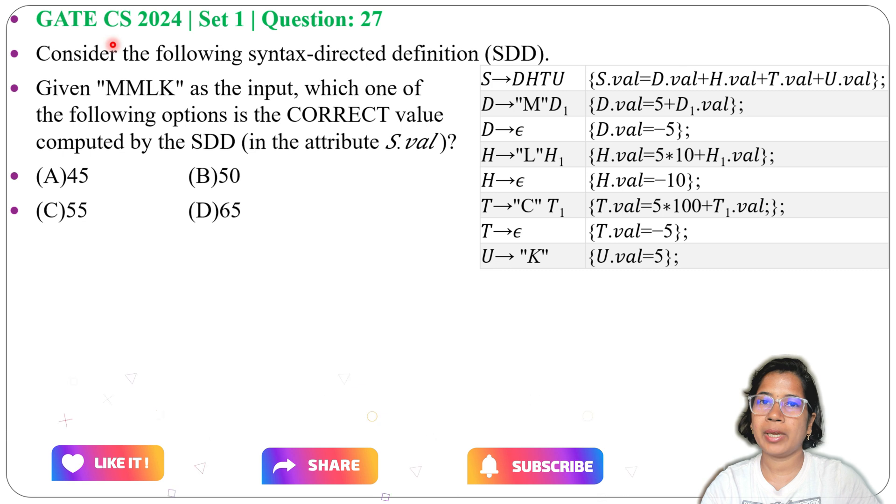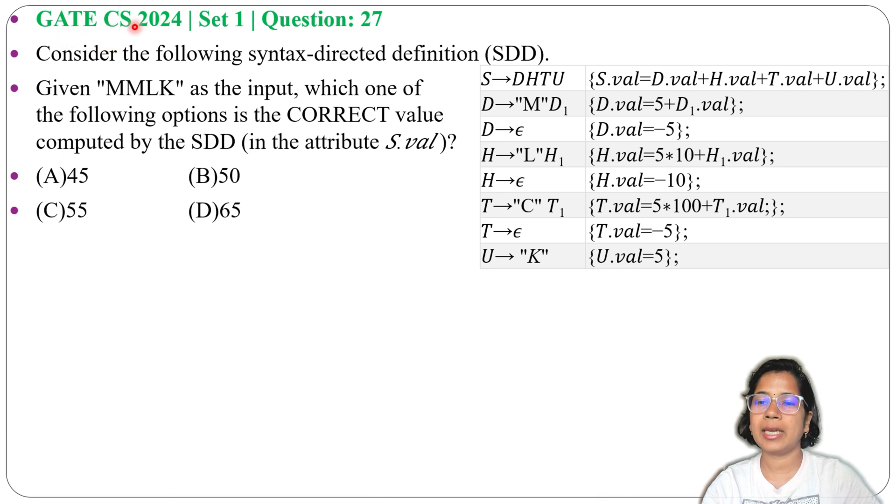Let's solve a previous question on SDD. This question was asked in GATE CS 2024 Set 1, Question number 27. Consider the following syntax-directed definition. Given MMLK as input, which one of the following options is the correct value computed by the SDD? Four options are given.